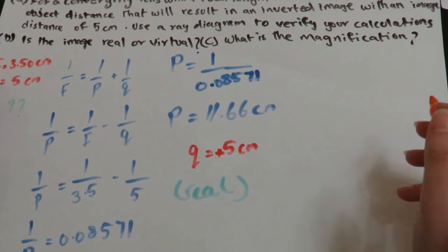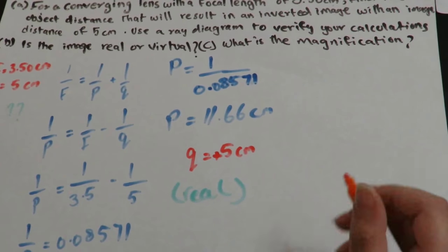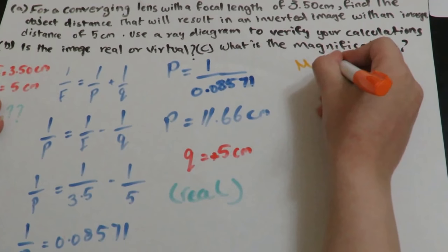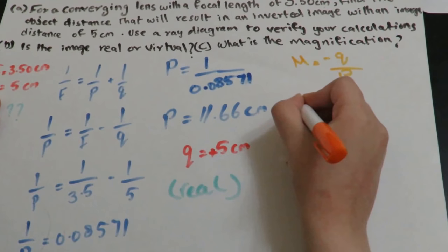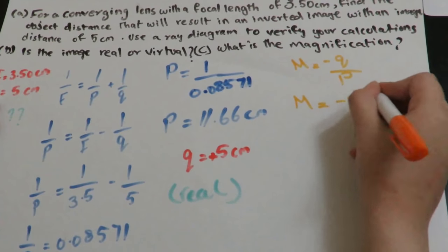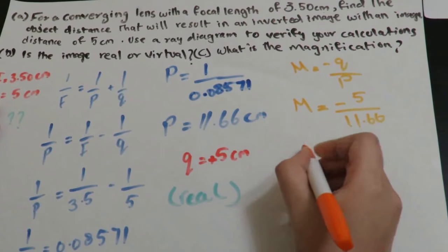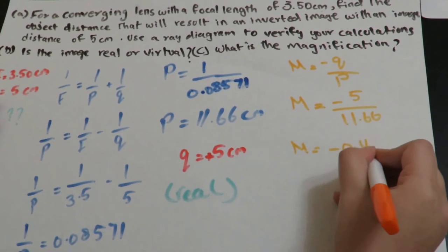So in part C, we have to find the magnification, and we will use the magnification formula, which is M equals negative Q over P. Now we will substitute the values, M equals negative 5 over 11.66, M equals negative 0.42.